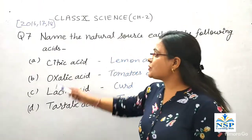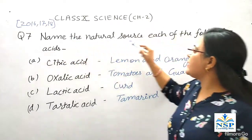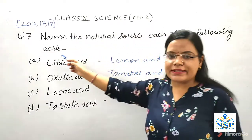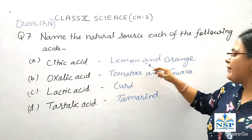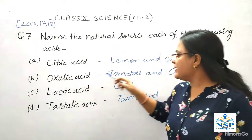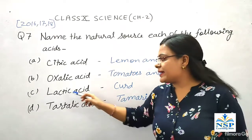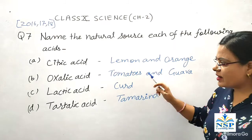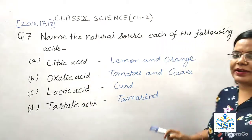Question number 7: Name the natural sources of each of the following acids. Citric acid — lemon and orange. Oxalic acid — tomatoes and guava. Lactic acid is present in curd. And tartaric acid is present in tamarind.